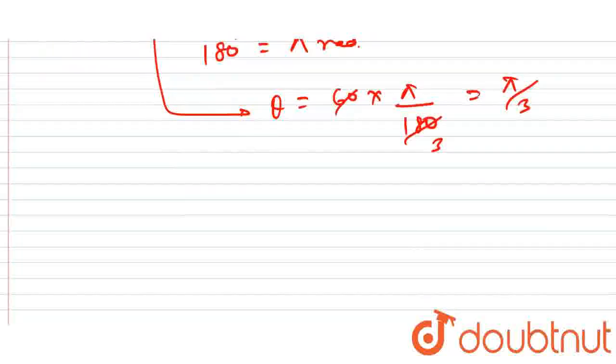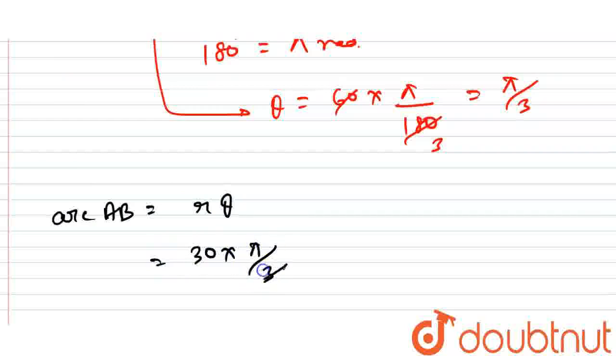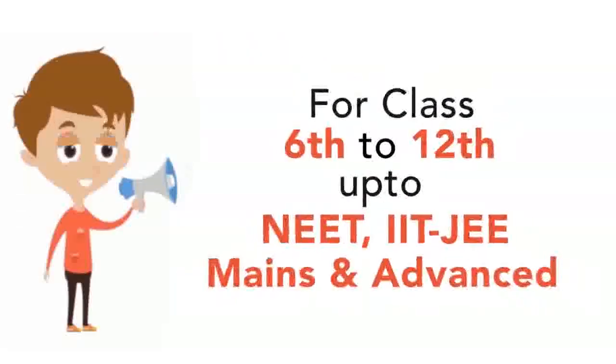So, what is the length of arc AB? Length of arc AB is equals to R into theta. R is 30 and theta is pi by 3. This is cancelled out in 10 times. So, this is equals to 10 pi. This is equals to 10 pi centimeter. Thank you. This is the answer.